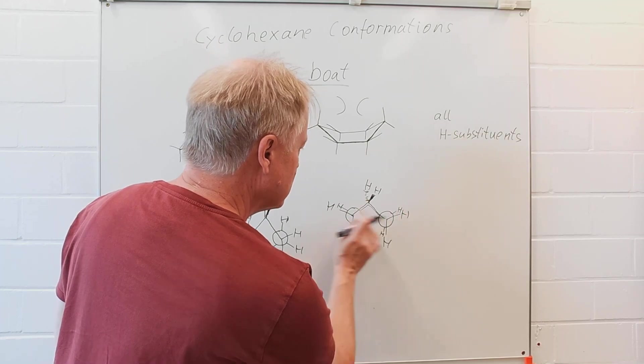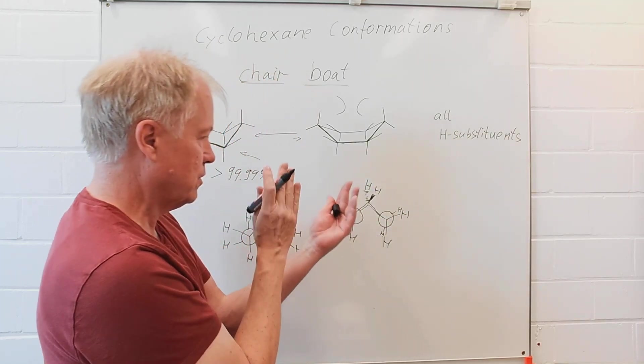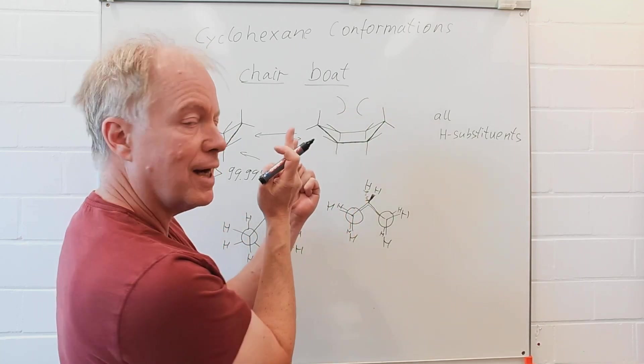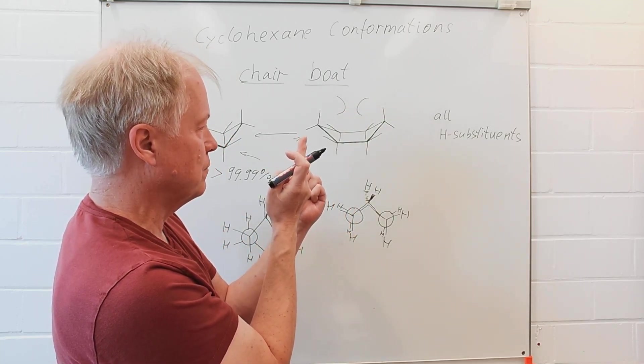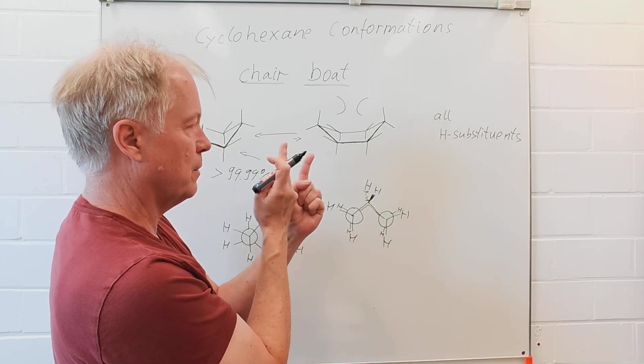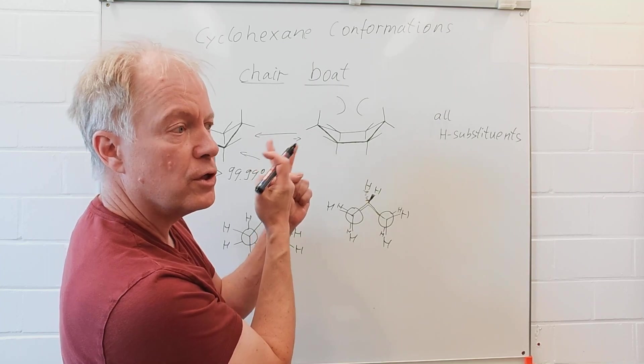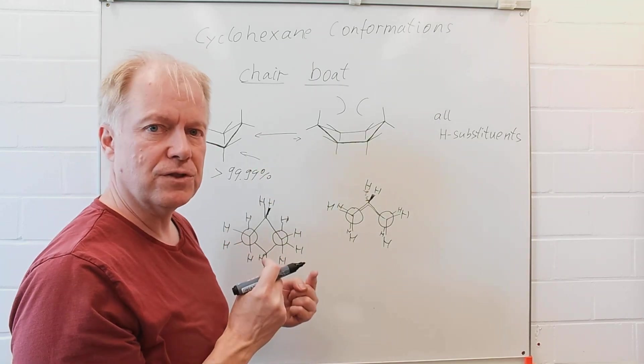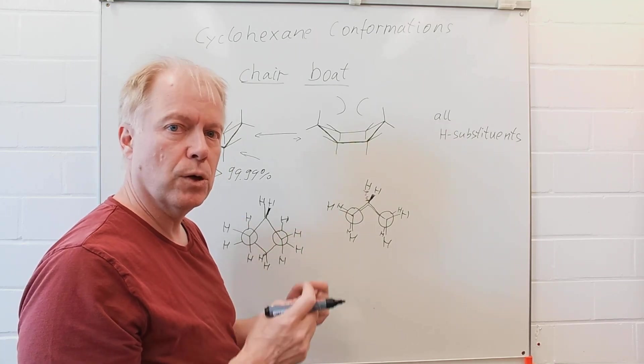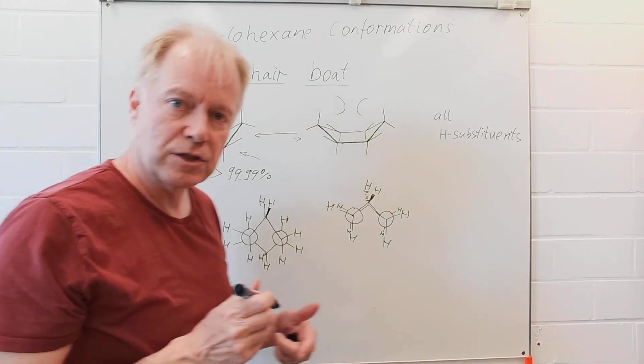Indeed those hydrogens here and also those hydrogens, those flagpole hydrogens try to avoid each other a little bit so the molecule with boat conformation should be preferentially twisted a little bit and this is then indeed the so-called twisted boat conformation. Thanks for listening.